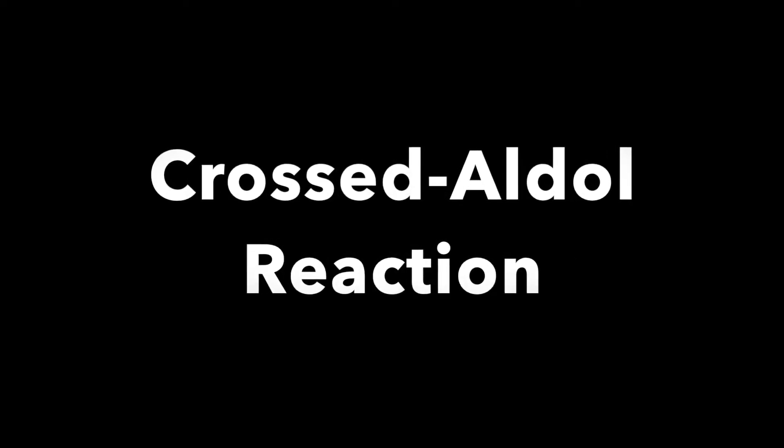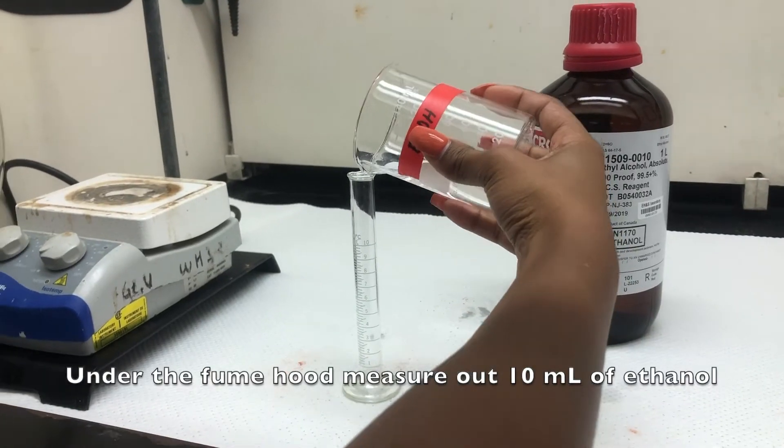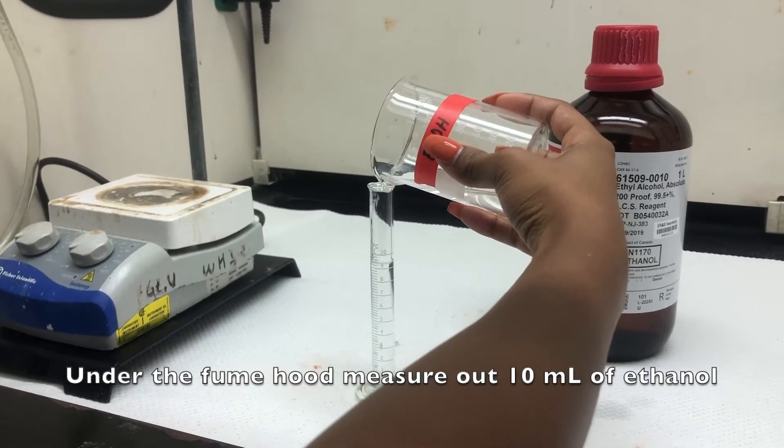Crossed aldol reaction. Obtain the needed materials. Under the fume hood, measure out 10 milliliters of ethanol.